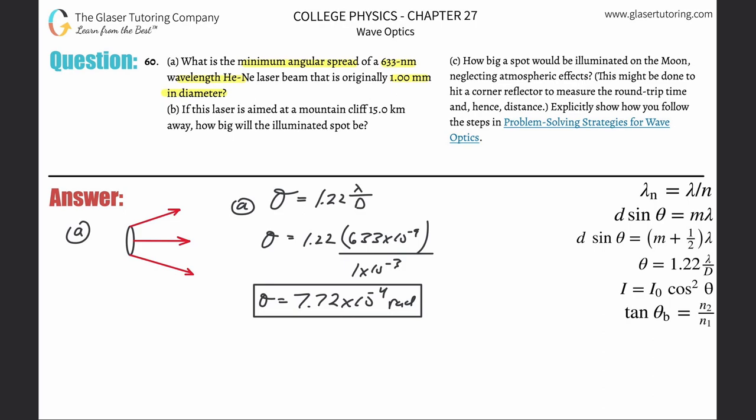Back to the problem. We found the angular spread. So that's letter A, it's in radians.